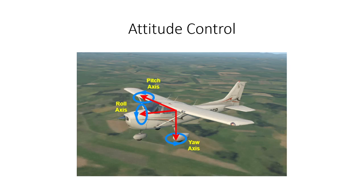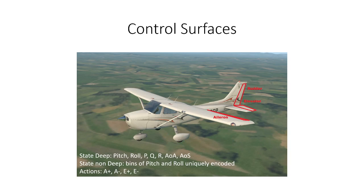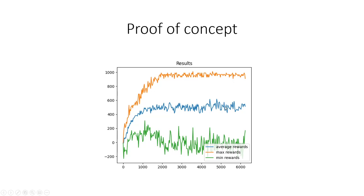The example I'm going to show is going to be attitude control. This is where we're going to try to control the pitch and roll axis, and for that, use the ailerons and the elevators. And down here is a different representation. So in deep, we have pitch, roll, angular velocities, angle of attack, and angle of slip. For non-deep, we bin pitch and roll and encode them uniquely, and the actions are ailerons and elevators. And here's a proof of concept, so we can see that the graph actually does converge to a policy, and we can take a look at that policy right now.